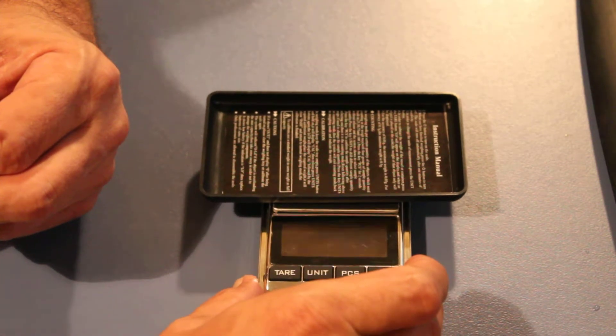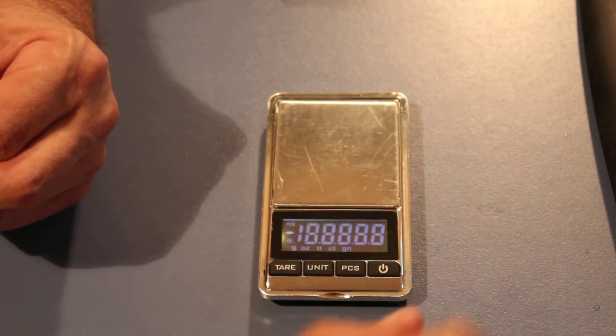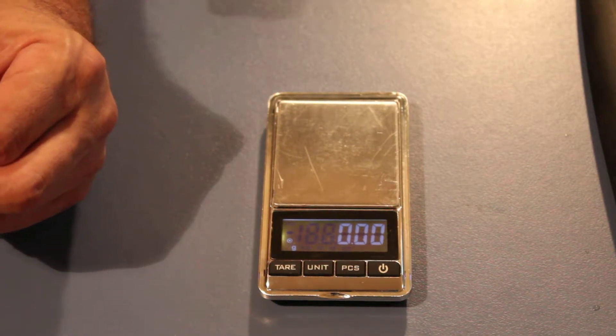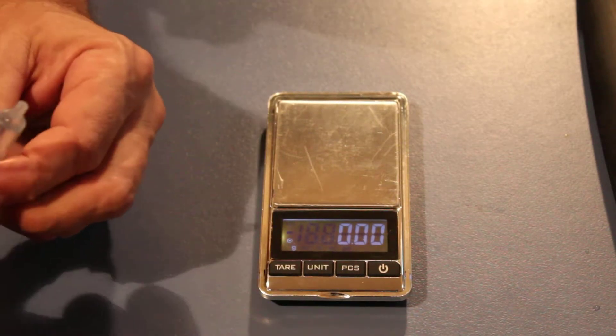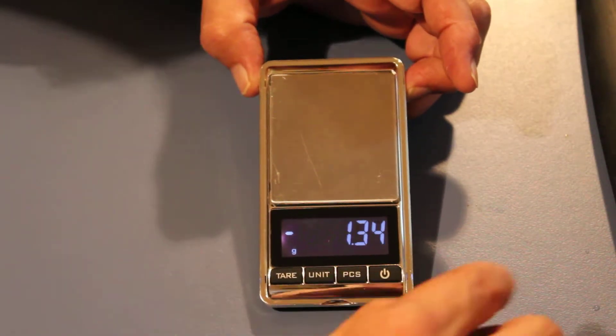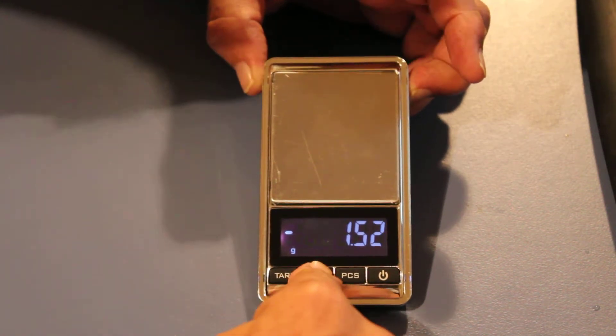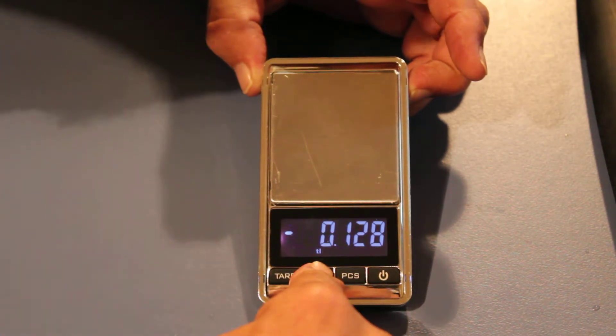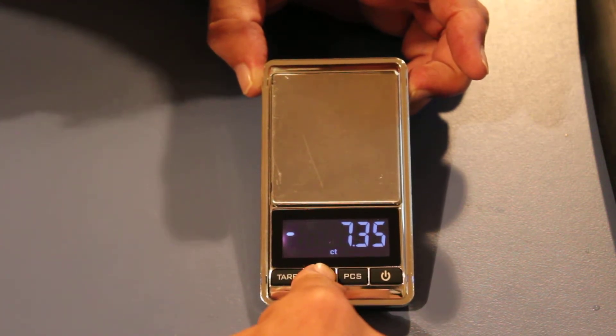Now before I do that, better turn it on. Okay, so you see everything there. Now you have your different units. It's grams at the moment. There we go. Okay, so units: grams, ounces, TL - I don't know what that is so I'll probably never need it, carats.